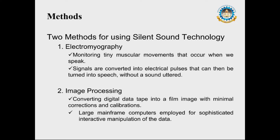The second method is image processing, which is the process of converting digital data into a film image with minimal corrections and calibrations. Large mainframe computers are employed for sophisticated interactive manipulation of the data.